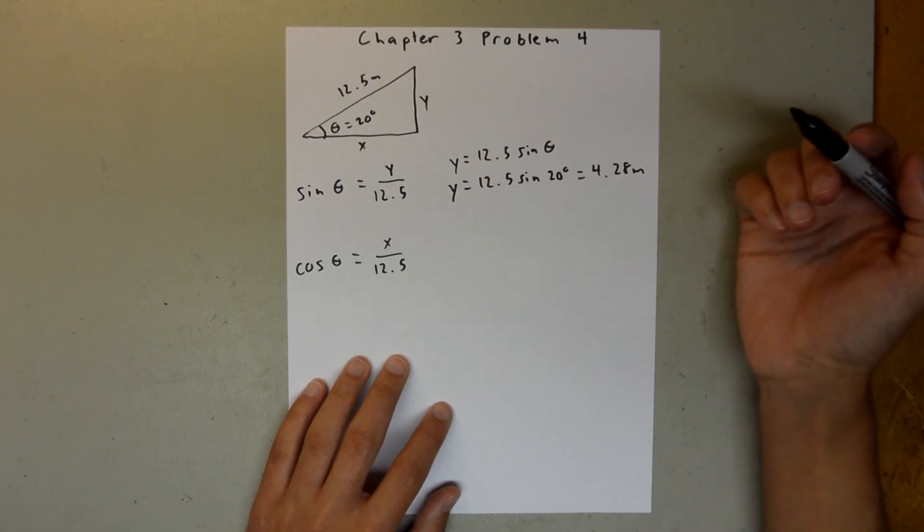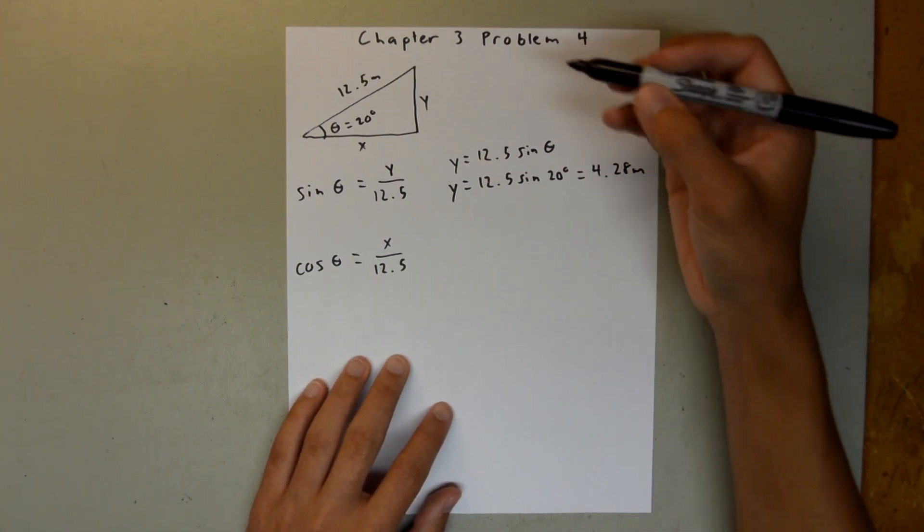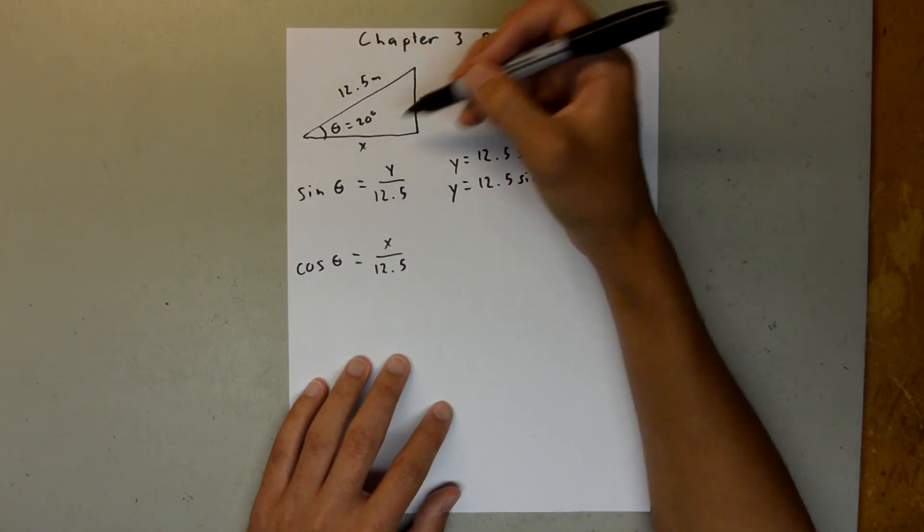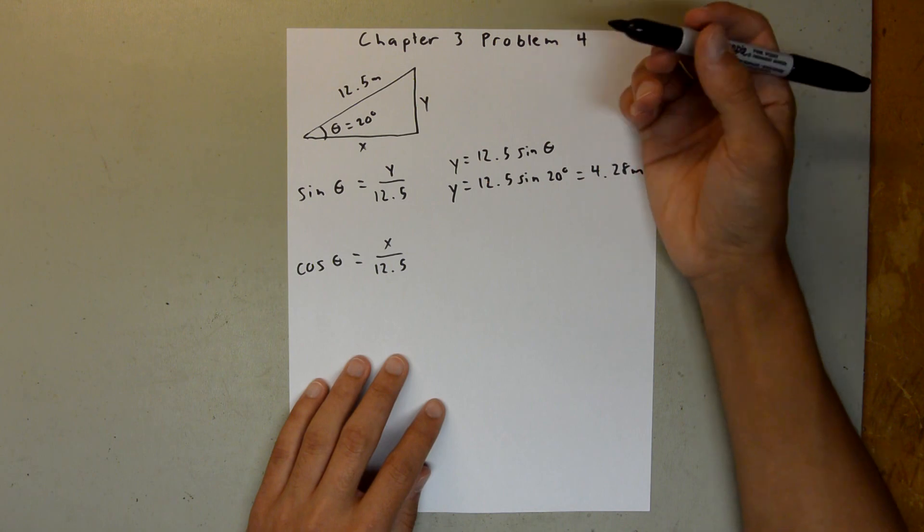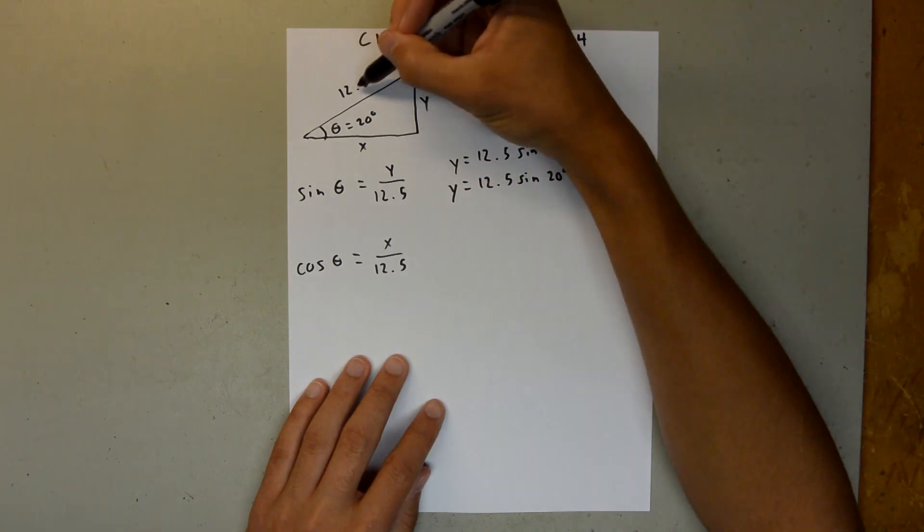Now you may be thinking, okay, I could have also used tangent. We just solved for the y value here. So we could use tangent, but just to be safe, I would only use exact values, like what you're given in the problem. Like here I was given 12.5, so I can use that as an exact value.